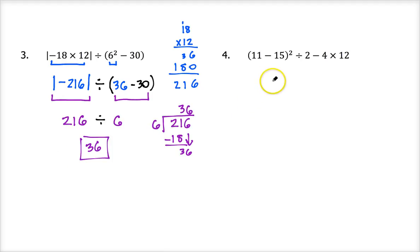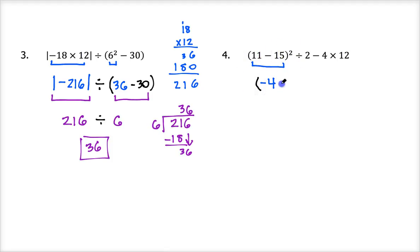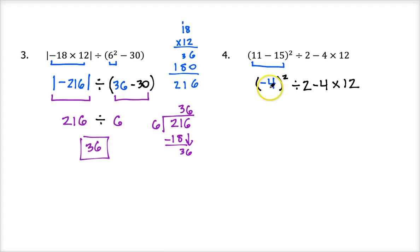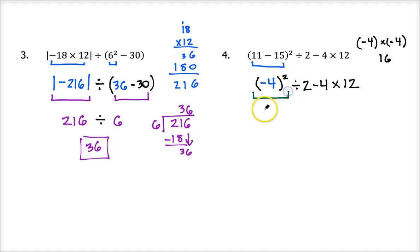Number 4 — I see grouping symbols, so that's where I'll start. I have 11 minus 15 inside the parentheses; 11 minus 15 is negative 4. I'll put negative 4 there, but notice there's an exponent outside the parentheses, so I need to keep both the parentheses and the exponent in my next step. Now negative 4 is as simple as it can be, so I take negative 4 to the second power. Squaring means times itself: negative 4 times negative 4 — a negative times a negative is positive — so this gives me positive 16.